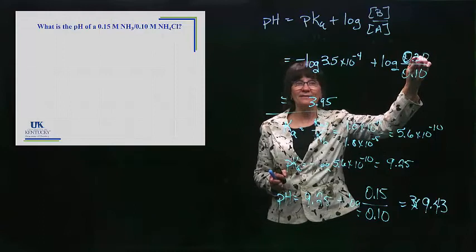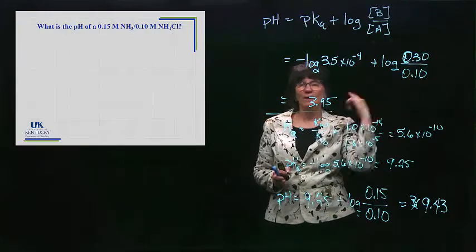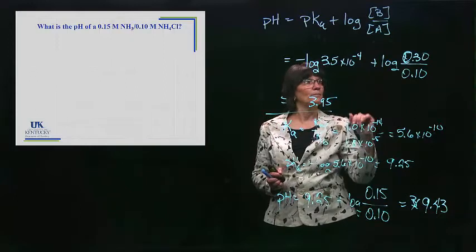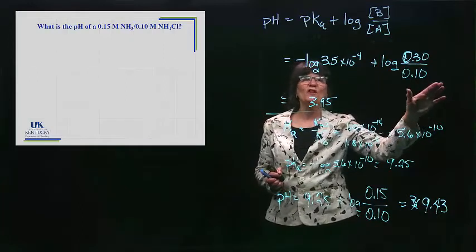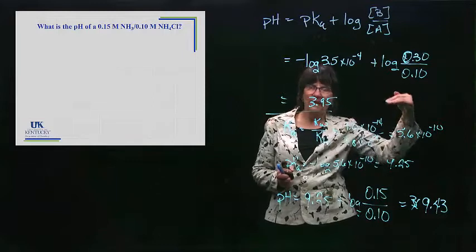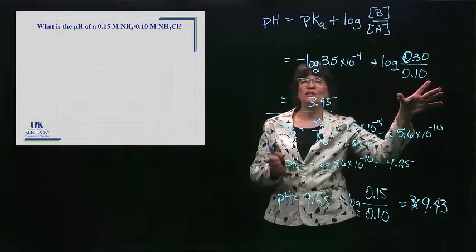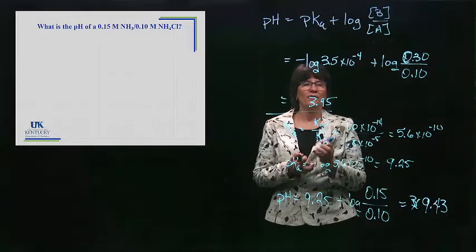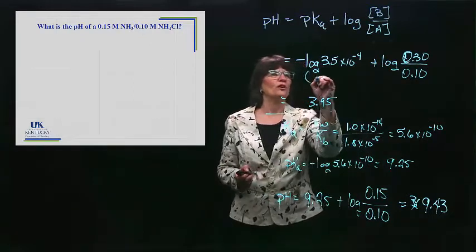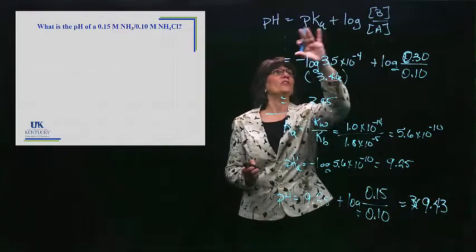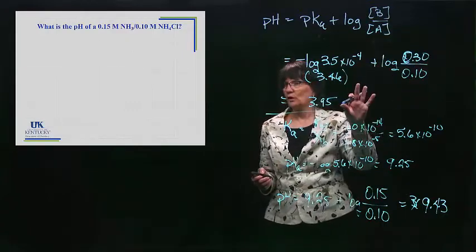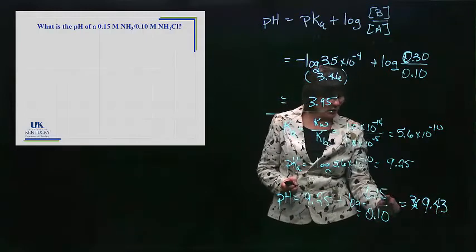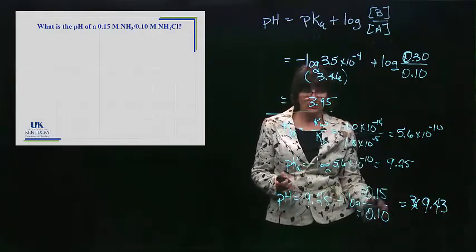If this ratio has more base than acid, it's going to eke it up. And let's think about that mathematically. The log of a number greater than 1 is positive. Okay? So it's going to get bigger. If the denominator is bigger, that means you've got more acid, and that's going to eke it down. It's going to make it go a little smaller. That should also make sense mathematically because you're taking the log of a fraction. The log of a fraction is a negative number, so you're subtracting from this value. What did I tell you it was? 3.46. So this part was 3.46. So in this scenario, I had a little bit more base, and it made it go a little bit higher.